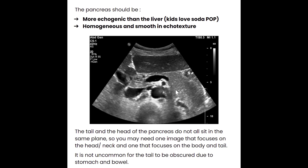Now the tail and the head of the pancreas don't always sit in the same plane, so you might need more than one image — one focused on the head and neck and one focused on the body and tail. Remember that the head and neck sit a little bit more inferior into the body and is covered by peritoneum, so the head of the pancreas is considered peritoneal, but on the whole the pancreas is considered a retroperitoneal organ. That tail is going to be more superior into the body and then dives a little bit more posterior.